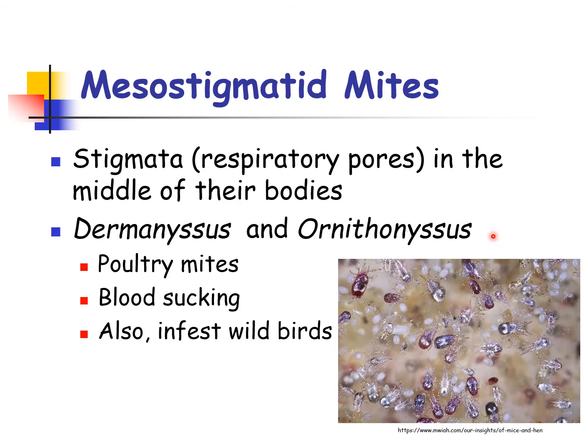Arthropods have a tracheal system that carries oxygen to various parts of the body. For high-level taxonomy, mites are classified by the location of the openings, or the stigmata, to their tracheal system. In the case of the Mesostigmata mites, their tracheal pores, or the stigmata, are located in the middle of their bodies, particularly between the coxae, or the hip joints, of the third and the fourth legs.